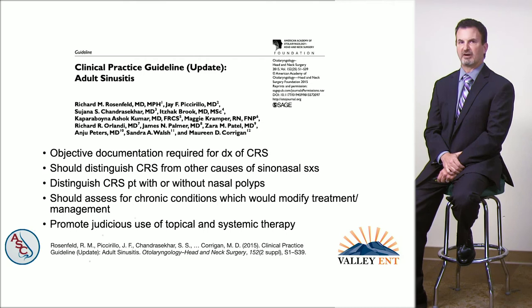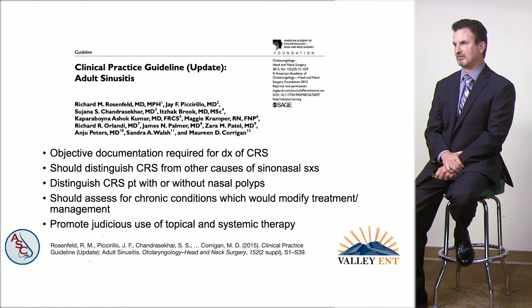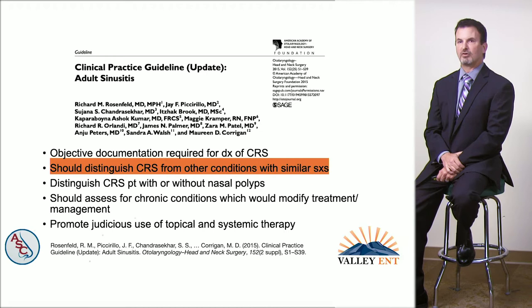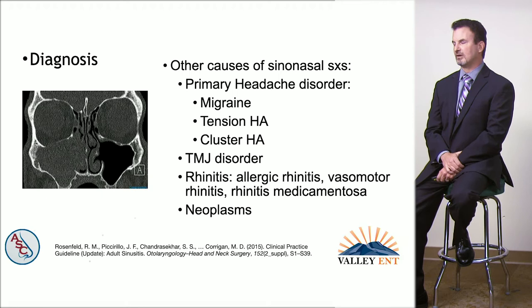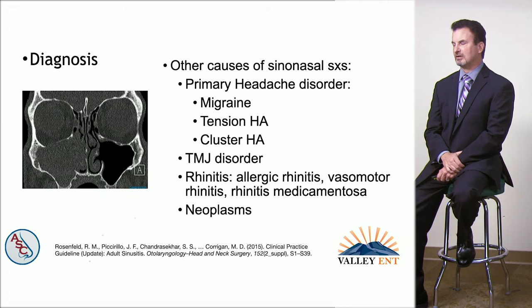A primary goal of the updated guidelines was to increase the diagnostic accuracy of chronic rhinosinusitis by requiring objective documentation. A second goal was to distinguish chronic rhinosinusitis from other conditions with similar symptoms, including primary headache disorders, TMJ disorder, various forms of rhinitis, and neoplasms. Of the primary headache disorders, migraines are most frequently misdiagnosed as chronic rhinosinusitis.